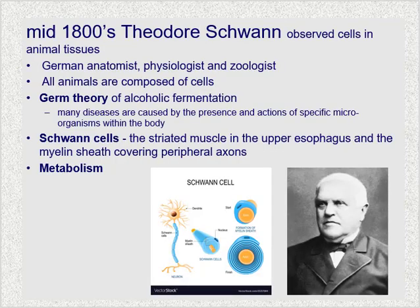By the mid-1800s, a German scientist named Theodor Schwann began looking more into animal cells and concluded that all animals were composed of cells, and that all tissues of animals were composed of cells. He was also the developer of the germ theory of alcohol fermentation, and discovered that most diseases were caused by the presence and actions of specific microorganisms within the body. Before that, it was uncommon for surgeons to even wash their hands between patients. Schwann changed how they thought about contagions — that you could carry microorganisms from one person to the next, creating sickness.